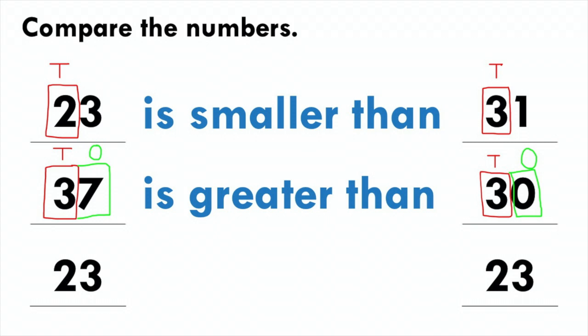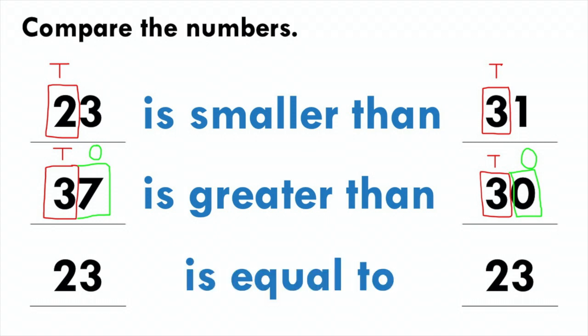For the last example on this page, I am comparing the numbers 23 and 23. Straight away you know that they are the same number, so we can say that 23 is equal to 23.